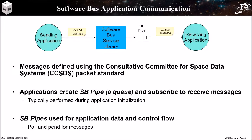The software bus service is the most prominent service because it provides communication using messages, and messages define each app's functional interface. This figure shows how the software bus is used to provide communication between applications. Software bus messages are defined using the CCSDS packet standard. CCSDS is a multinational forum for the development of communications and data systems standards for spaceflight. An application that wants to receive messages must first define a software bus pipe, then subscribe to messages it wants to receive on that pipe. A pipe is essentially a first-in, first-out queue. An application that wants to send a message simply calls the software bus service — the sending application has no knowledge of who will receive the message.